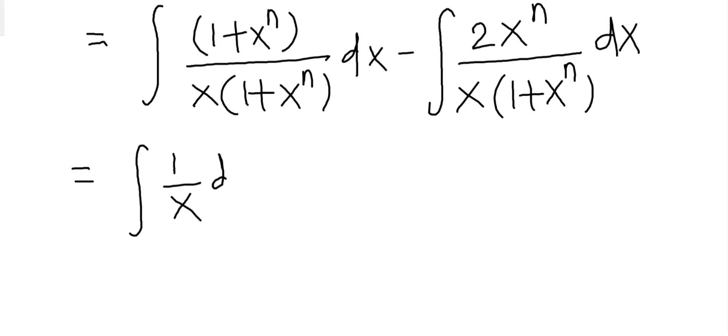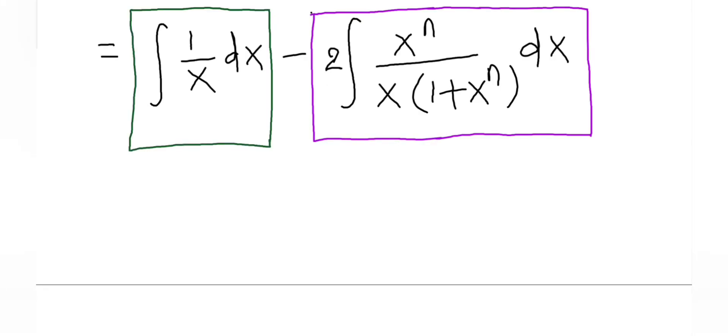For the second term, we can take -2 outside, giving -2 ∫ x^n / (x(1 + x^n)) dx. As you can see, the first integral is ln(x), but now we have to evaluate the second one.